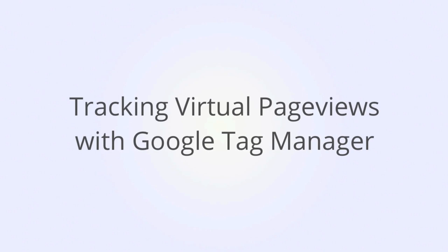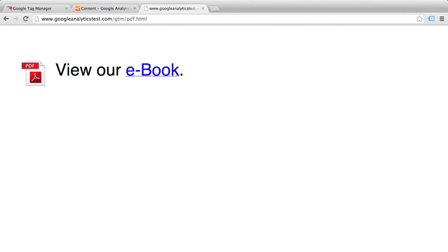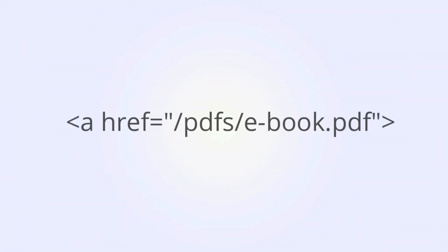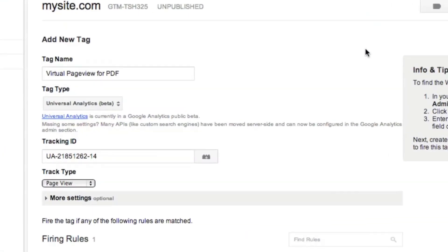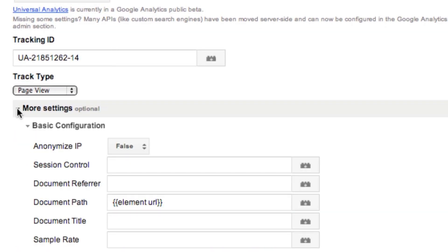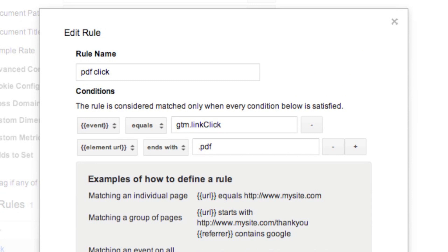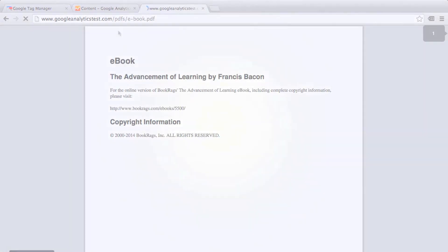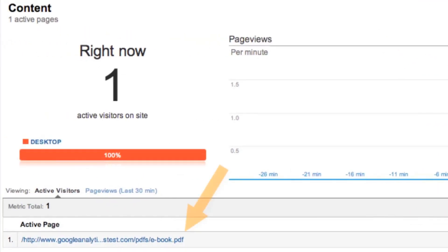Earlier on, we looked at several types of user interactions that don't cause the page to reload and that we might therefore want to track as either events or virtual page views. So now we'll look at virtual page views through Google Tag Manager. Let's say we want to track all PDF clicks as virtual page views. When setting up our virtual page view tag, we're going to take advantage of the href value or the element URL as both the rule and as the value we're passing in for our virtual page view. Track type is page view, but we're going to overwrite the page URL by specifying a value for document path — in this case, element URL. Rule: event equals GTM link click and element URL ends with .pdf. Let's test this out — click the e-book link, PDF opens, check the real-time content report, and there is our virtual page view. Active page: e-book PDF.